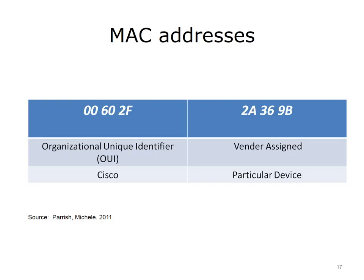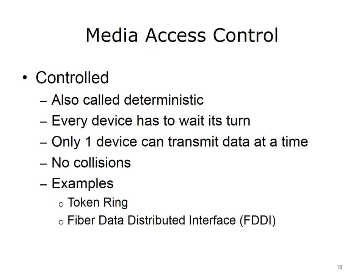The data link layer moves frames through the network using physical addresses. This is the layer where software and hardware come together. It contains two sublayers: the Logical Link Control, LLC, and the Media Access Control, MAC. The LLC sublayer interacts with the network layer and identifies what network layer protocol is being used, allowing different network layer protocols to use the same network interface and media. The MAC sublayer interacts with the physical layer and provides data link layer addressing.